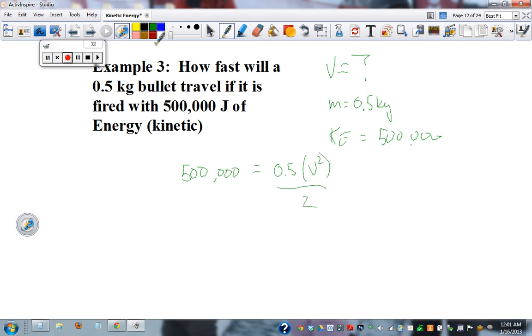So algebra through it now, times 2, 1,000,000, equals 0.5, times velocity squared. Next step, blue and blue, divide the 0.5, and that equals 2,000,000, equals V squared.